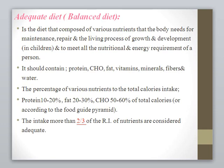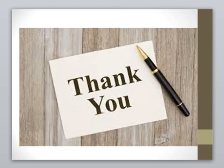What is an adequate diet? It is a balanced diet composed of various nutrients the body needs for maintenance, repair, growth, and development. It must meet all nutritional and energy requirements. It should contain protein, carbohydrate, fat, vitamins, minerals, fibers, and water. The percentage of nutrients to total calorie intake: protein 10 to 20%, fat 20 to 30%, and carbohydrate 50 to 60% of total calories. Importantly, intake of more than two-thirds of the recommended intake of a nutrient is considered adequate. Thank you.